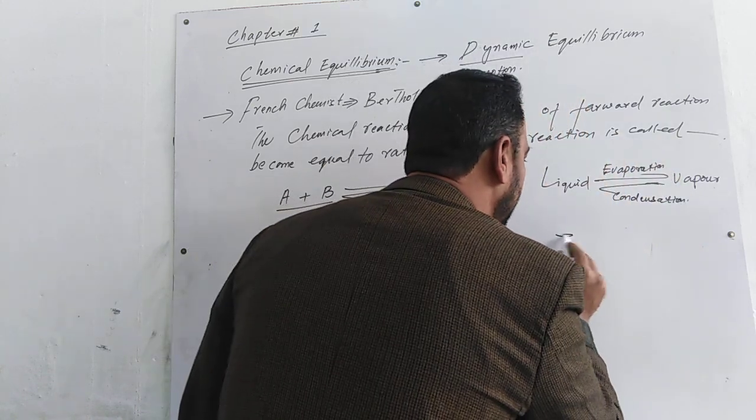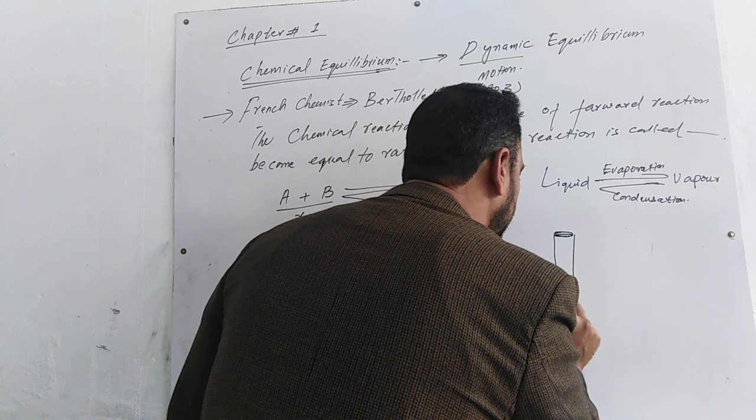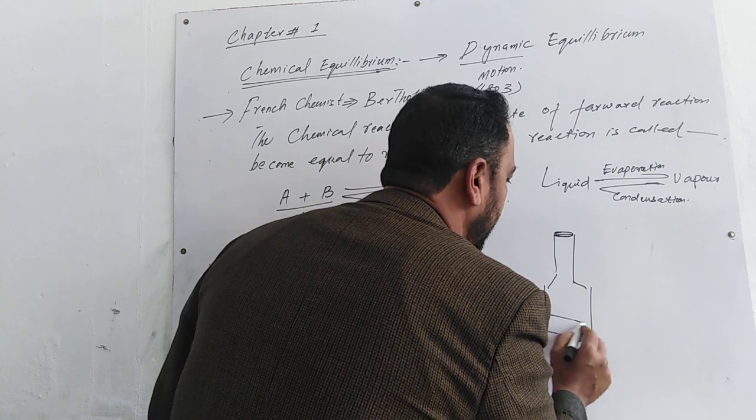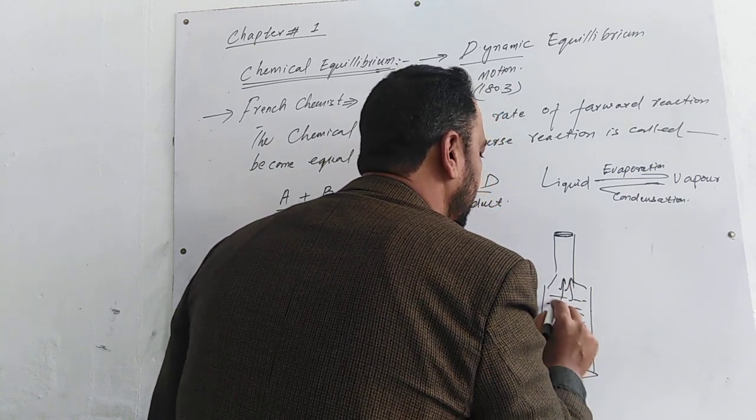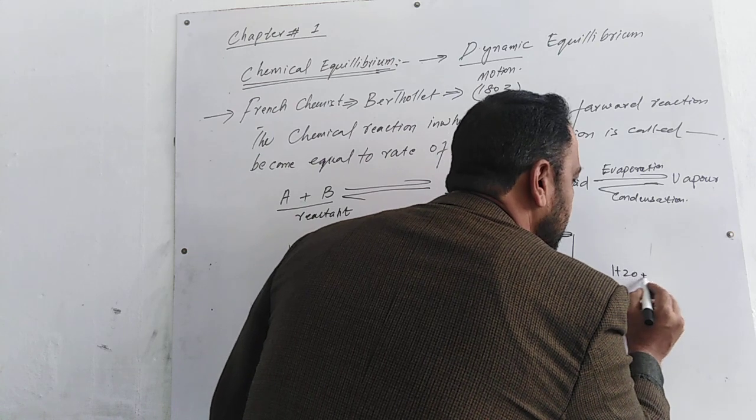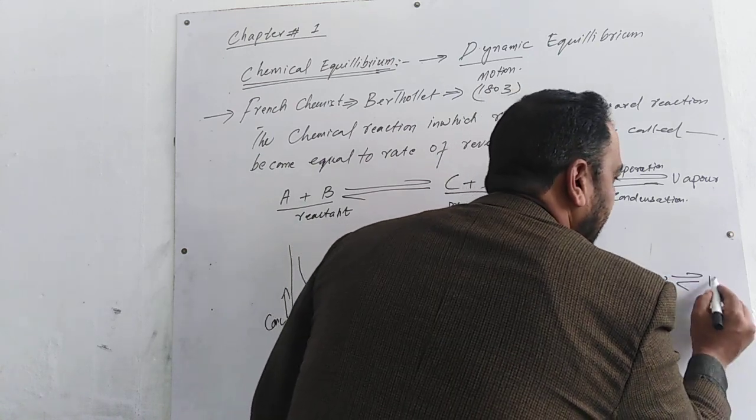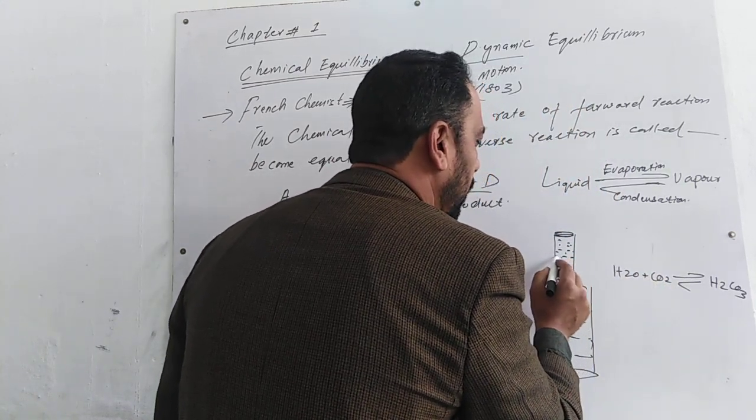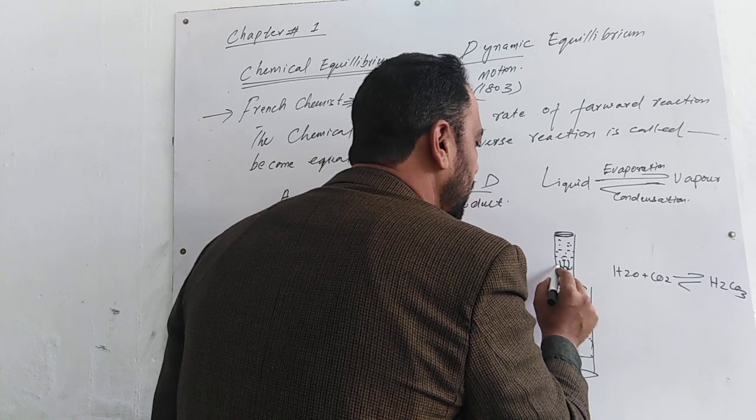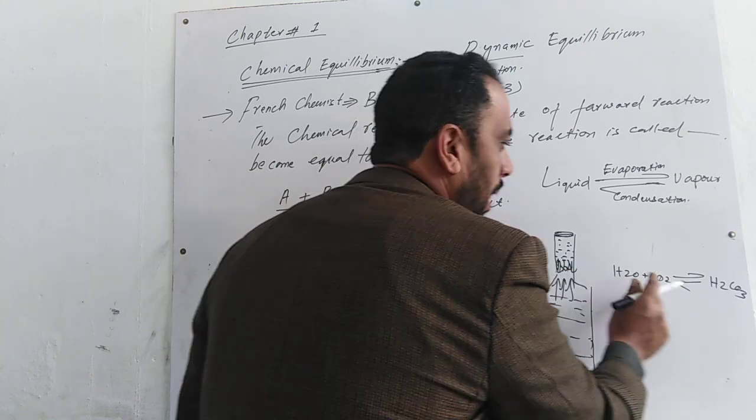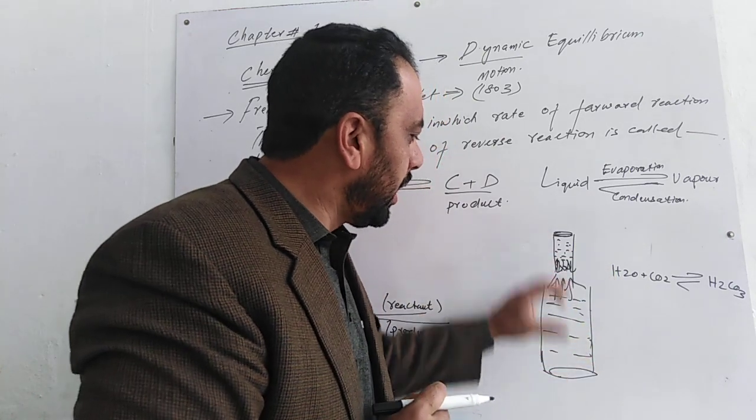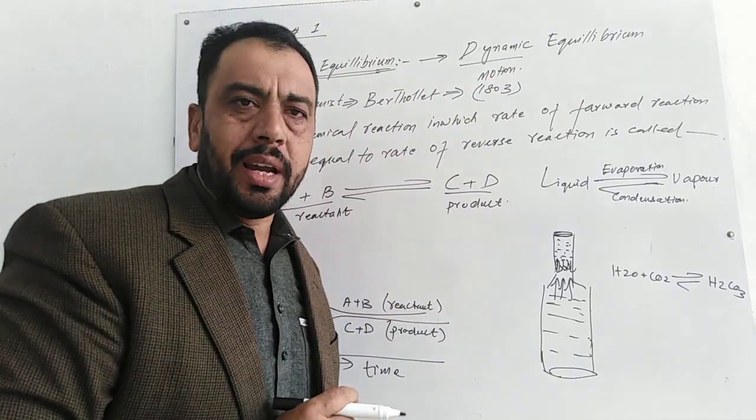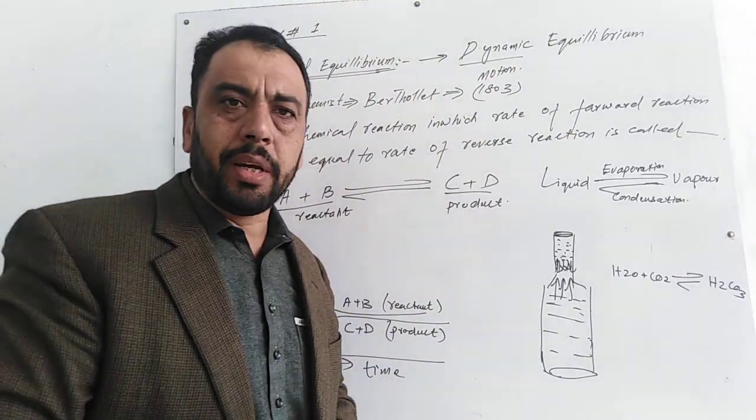If I take an example here - if there is liquid, it continuously changes. Evaporation occurs continuously, vapors form, and those vapors convert back to liquid. This evaporation and condensation process is called dynamic equilibrium or chemical equilibrium.